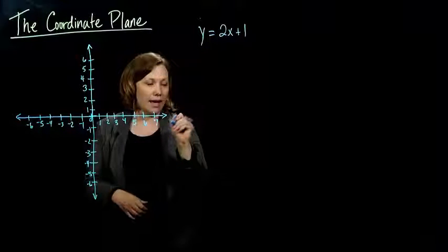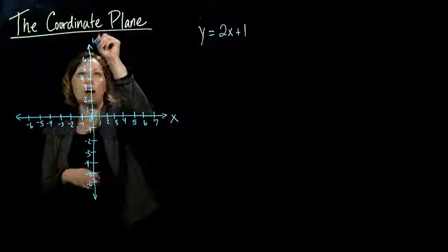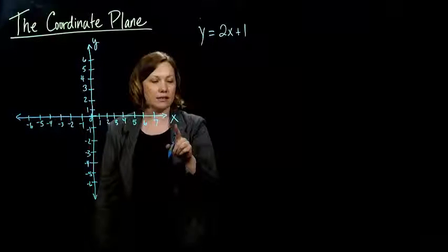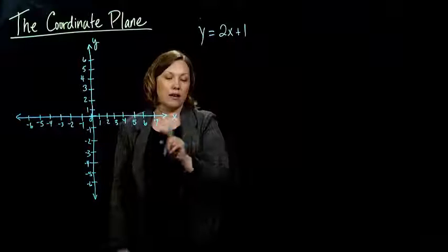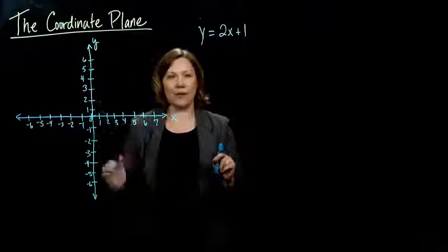So we make x our horizontal usually, and y our vertical number line. So x represents the horizontal number line and the vertical number line represents the y's.